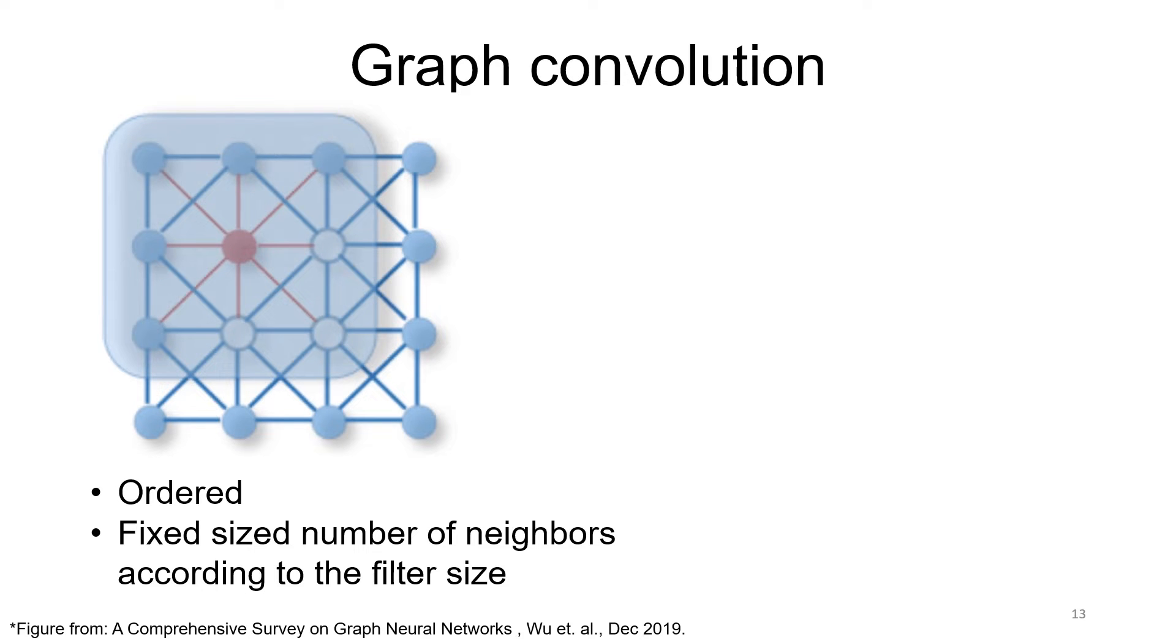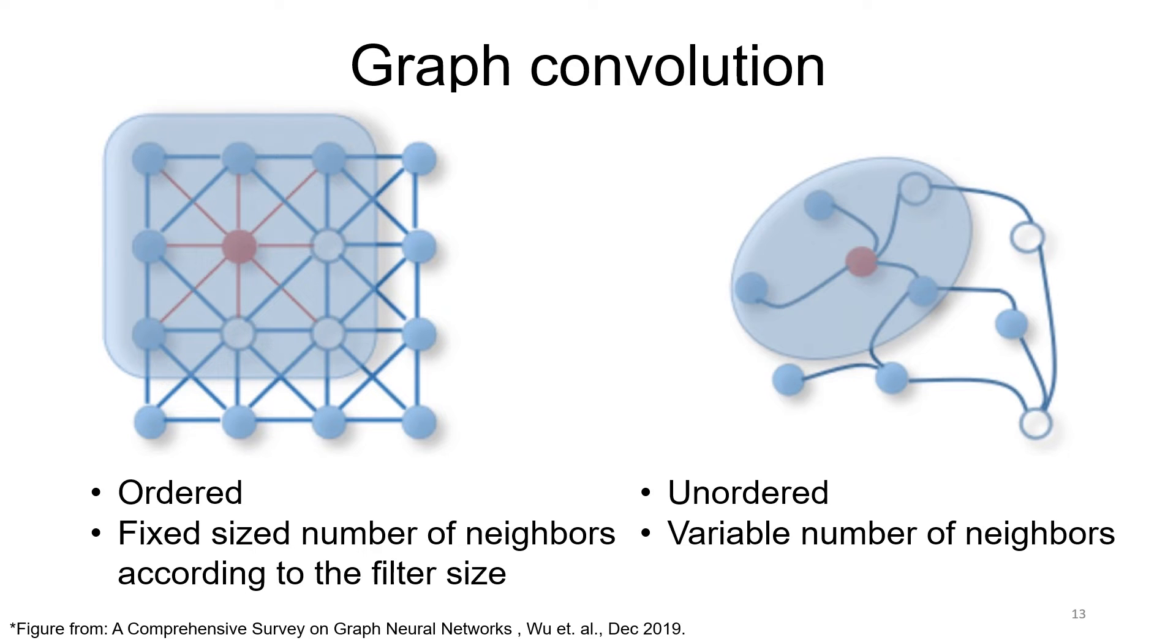The convolution operation on graph is not trivial as on images. Images are ordered and contain a fixed size of neighbors. On the other hand, graph is unordered and doesn't necessarily have fixed neighbor size, which makes the convolution operation hard to implement efficiently.